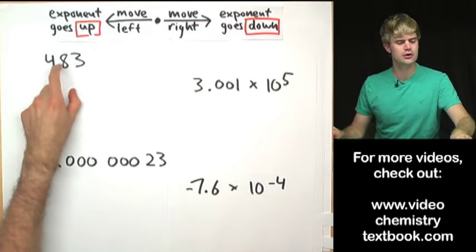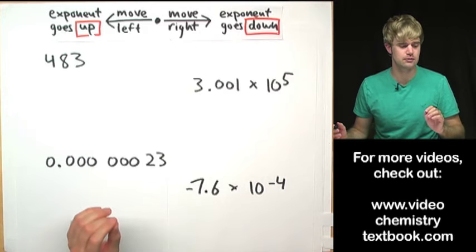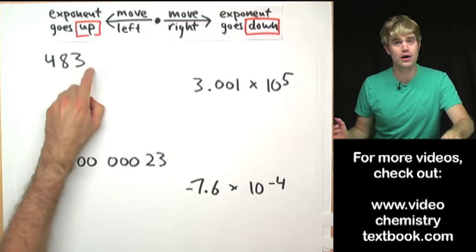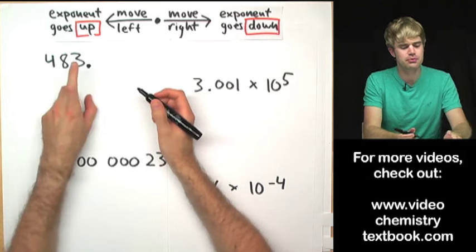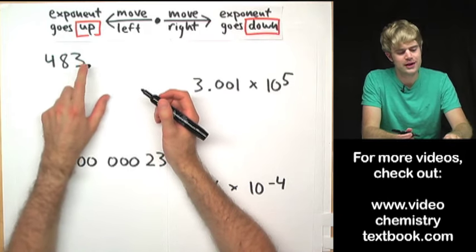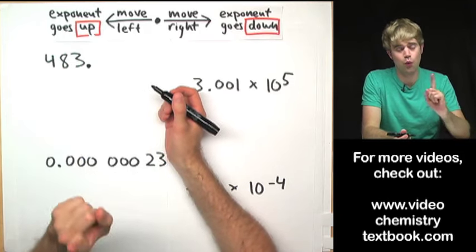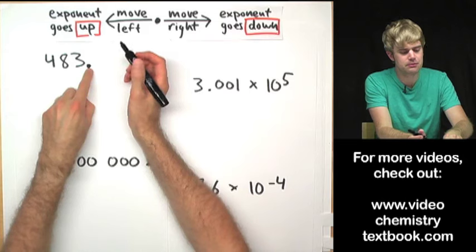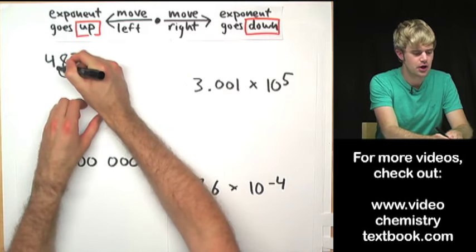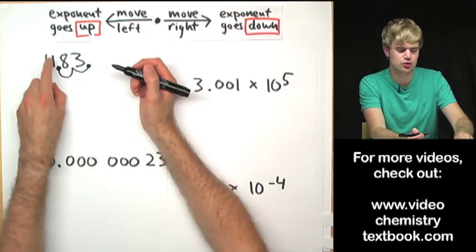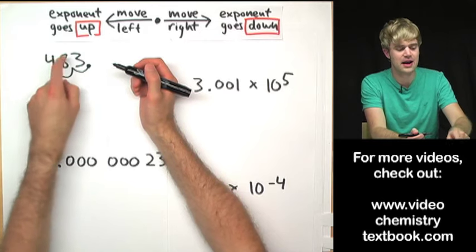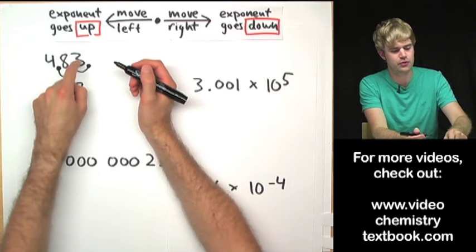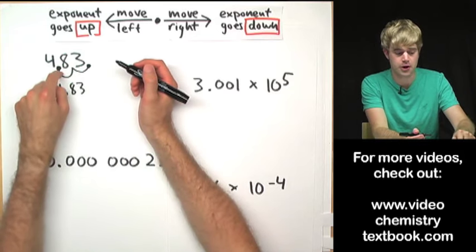Here's our first example: 483, we want to put it into scientific notation. So where's the decimal point? It's not written in this number but we know that it's right here so I'm going to put it in. Now to put this in scientific notation, we need to move this decimal place so that there is only one digit that isn't zero to its left.